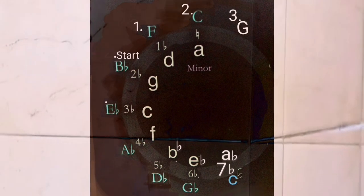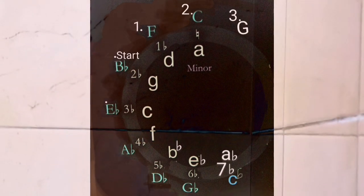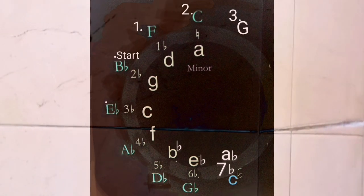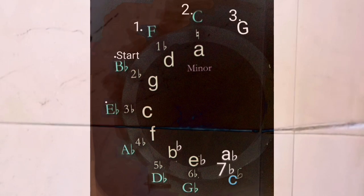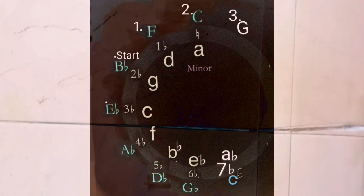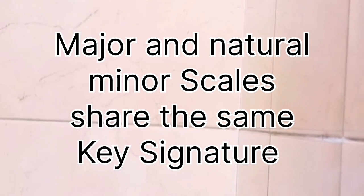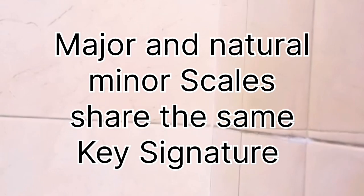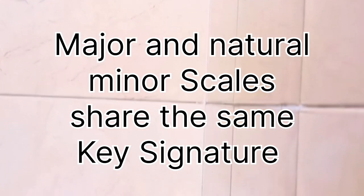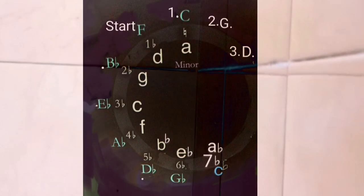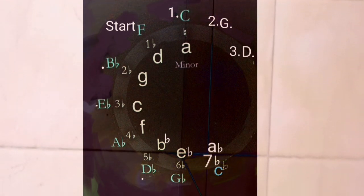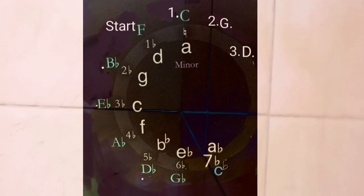The next example is B-flat major. You count one, two, three and end up on G. Remember, the relative minor key keeps the same key signature as its major key. So even though it lands on the sharp side, it's actually going to be G minor with one flat. Finally, F major has D minor as its relative minor, and remember it's going to have the same key signature of one flat.